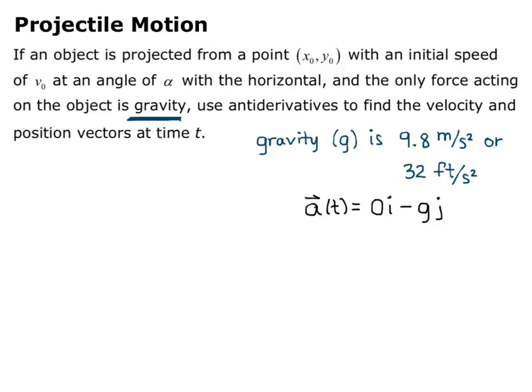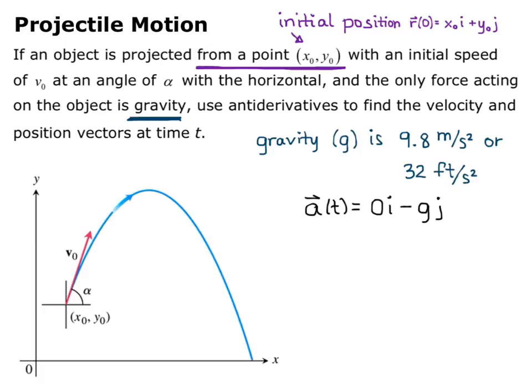The acceleration is a(t) = 0i − g·j, where g is gravity, subtracted because it acts downward with no horizontal acceleration. The initial position gives r(0) = x₀i + y₀j. We have acceleration and initial position; we still need initial velocity. The projectile is launched from (x₀, y₀) upward with speed v₀ at angle α, following a parabolic path.